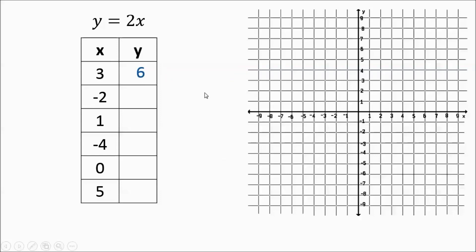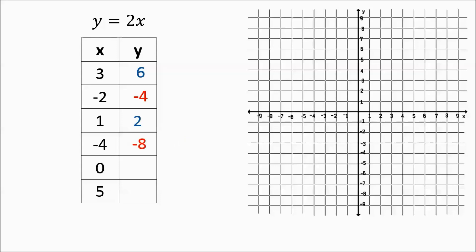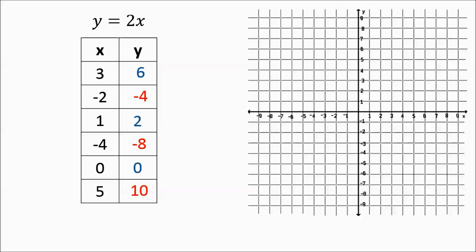For my next one, I've got 2 times negative 2. My input is negative 2, so 2 times negative 2, your y value is going to be negative 4. And then I'm going to put an input of 1 — y equals 2 times 1, so my y column is going to read 2. Next, we're going to have 2 times negative 4, so my y value will be negative 8. Then 2 times 0 — anything times 0 is 0, that's the multiplicative property of 0. And then we stick in a 5 for the input; 2 times 5 is 10. So that's how we got this table filled in.